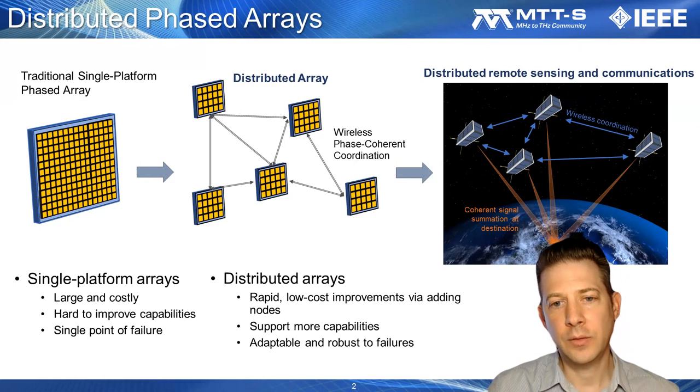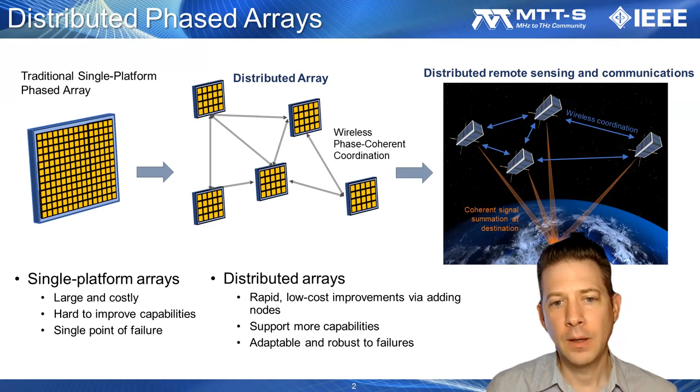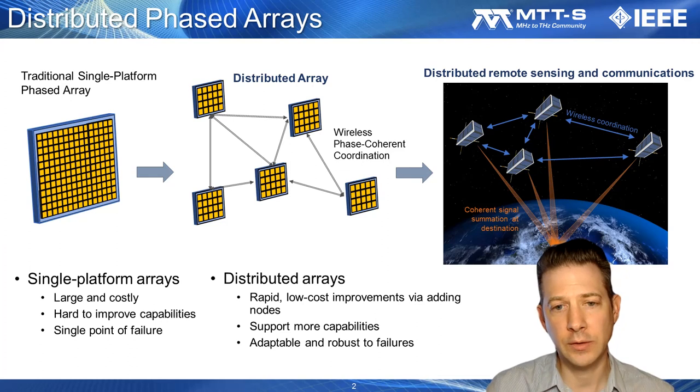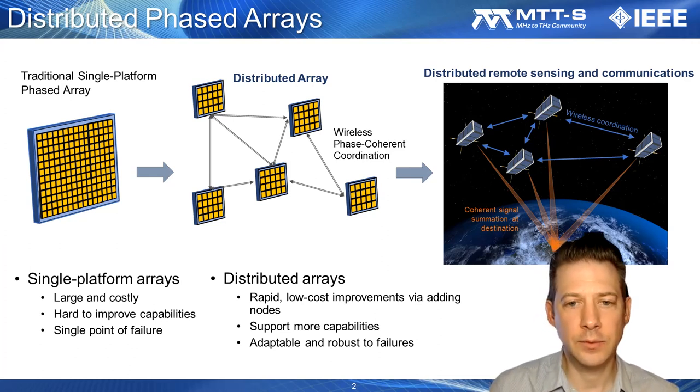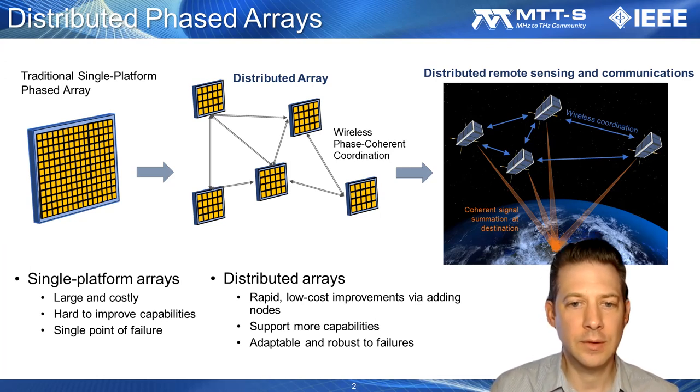The ultimate level of coordination between platforms is at the wavelength level, and this is where separate platforms operate as a coherent system. Wireless coherent distributed systems are essentially distributed phased arrays, and these yield a significant number of benefits over traditional single-platform arrays, including enhanced signal gain achieved from the aggregate signal power on transmit, and the directivity achieved on both transmit and receive.